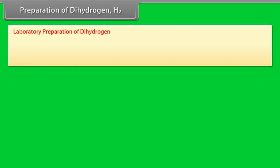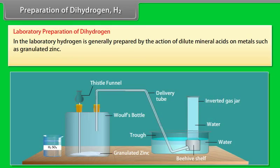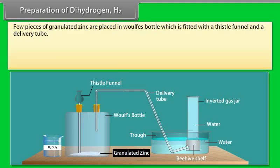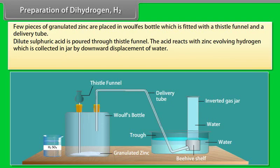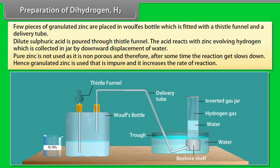Preparation of dihydrogen. Laboratory preparation of dihydrogen. In the laboratory, hydrogen is generally prepared by the action of dilute mineral acids on metals such as granulated zinc. Few pieces of granulated zinc are placed in vaults bottle which is fitted with a thistle funnel and a delivery tube. Dilute sulphuric acid is poured through thistle funnel. The acid reacts with zinc, evolving hydrogen, which is collected in jar by downward displacement of water. Pure zinc is not used as it is non-porous and therefore, after some time, the reaction slows down. Hence, granulated zinc is used that is impure and it increases the rate of reaction.